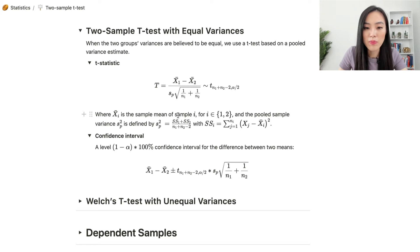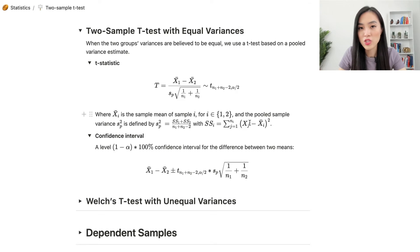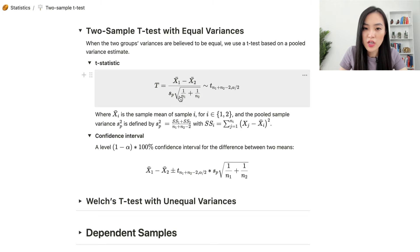Here, xi-bar is the sample mean of sample i (for i = 1 or 2). The pooled sample variance sp-squared is defined as (SS1 + SS2) / (n1 + n2 - 2), where the sum of squares is the sum of squared deviations of each data point xj from the sample mean xi-bar. Under the null hypothesis, the t-statistic follows a t-distribution with degrees of freedom n1 + n2 - 2. The numerator is the difference between sample means and the denominator is the sample standard deviation of the difference.